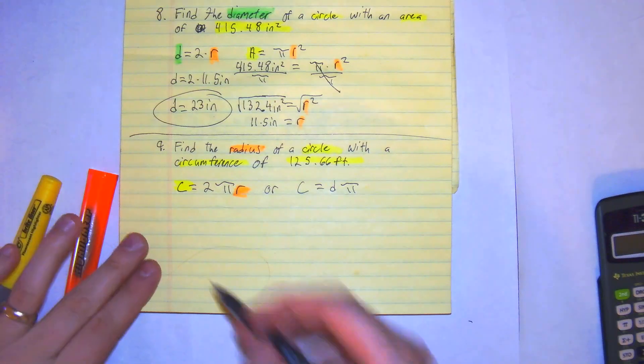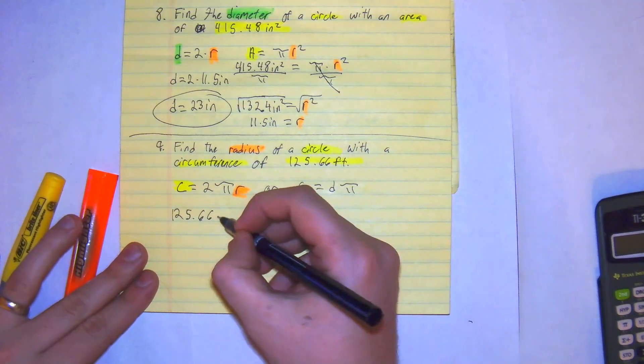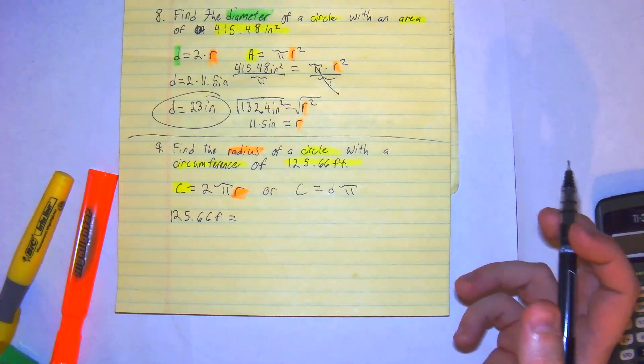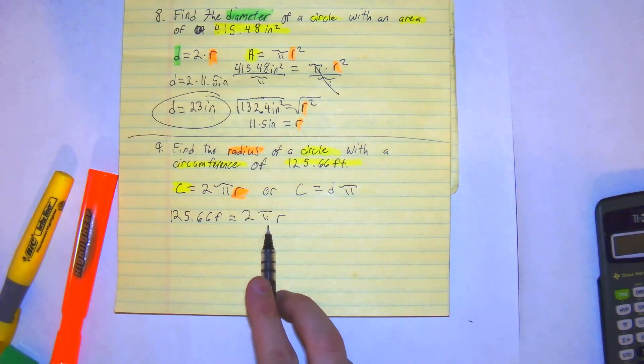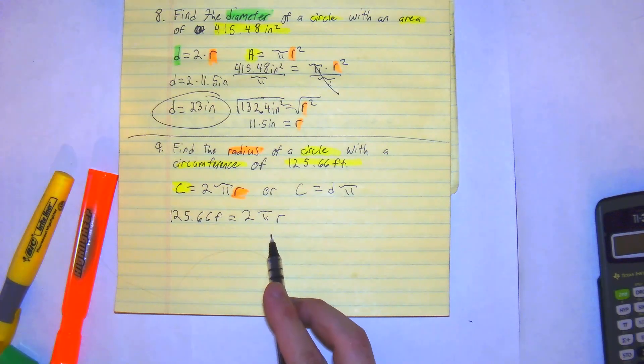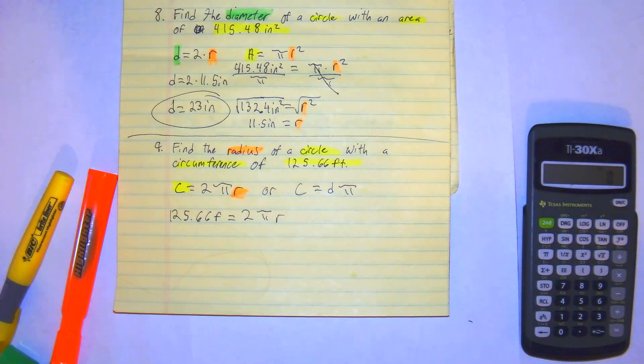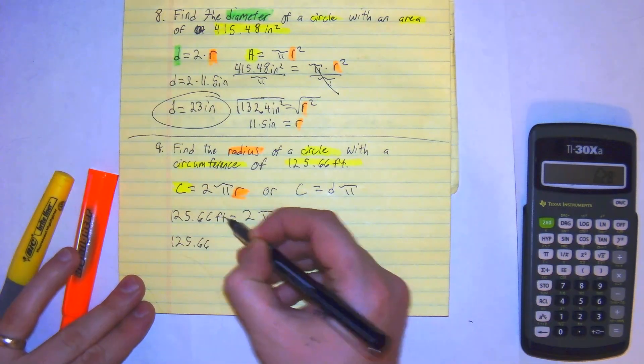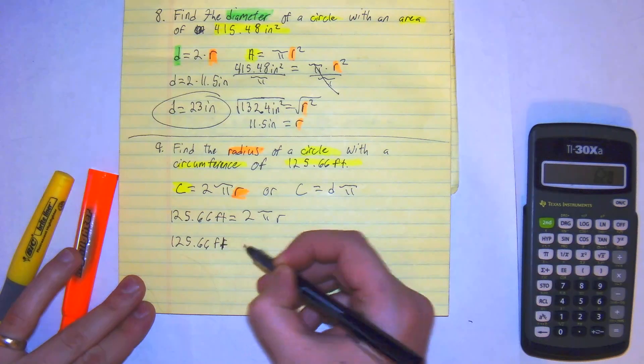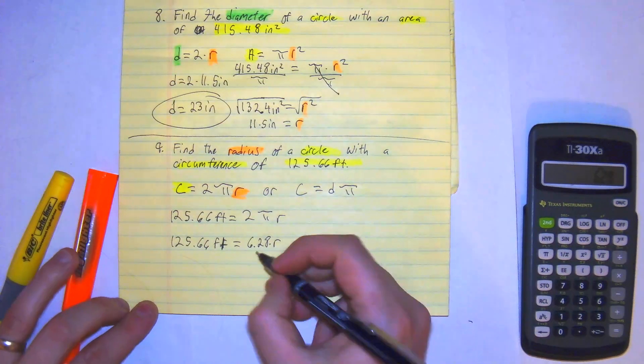All right, so we're going to use the circumference given: 125.66 feet equals 2πr. For the value of π, I'm going to round it to about 3.14, so this will be 6.28. So we get right here, 125.66 feet, this will be 6.28 times r. Divide both sides by 6.28.